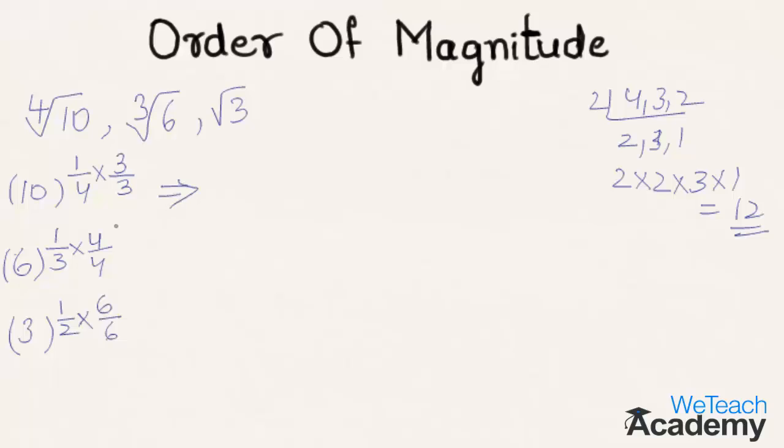Hence we get 10 raised to the power 3 by 12, and we get 6 raised to the power 4 by 12, and then we get 3 raised to the power 6 by 12.